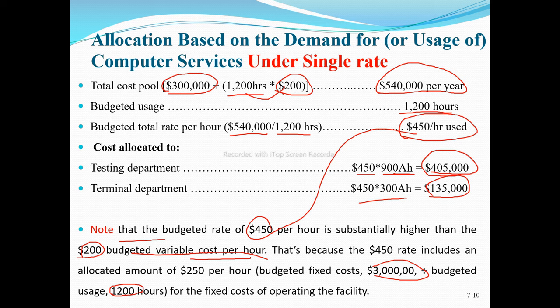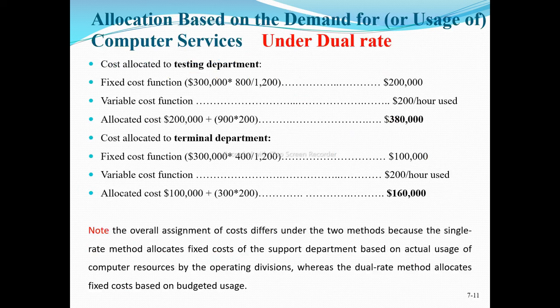Under the dual rate method, each cost pool has a different rate — a fixed cost rate and a variable cost rate. These different rates provide more detailed information than the single rate approach.